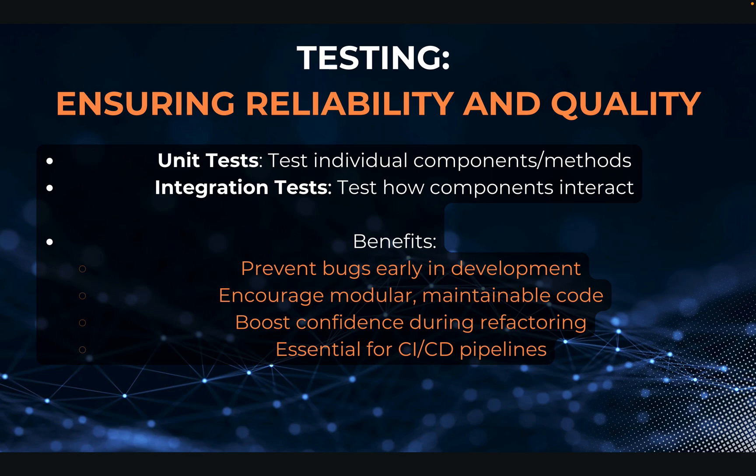Testing ensures reliable and quality software. With a unit test, you test your individual components, your methods, just a small piece of code. With an integration test, you test how your components interact with other components. The benefits are that it prevents bugs early in development and it encourages modular, maintainable code. If you struggle to write unit tests for a method, it might be because you have spaghetti code and need to break methods into smaller pieces — and maybe you've violated the single responsibility principle. Writing unit tests helps you figure that out early in the development stage.